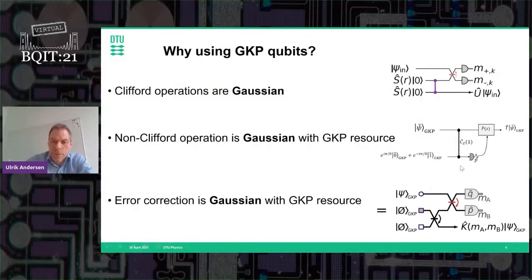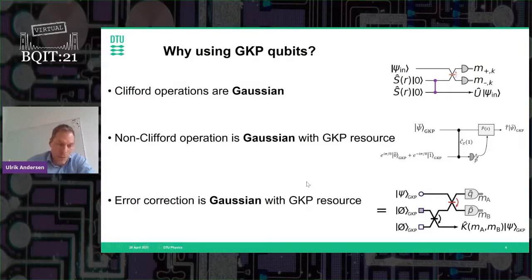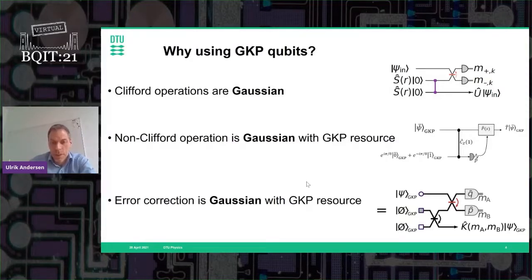Non-Clifford operations can also be done using Gaussian transformations if you have GKP states at your disposal. You implement a two-mode Gaussian state, perform a homodyne measurement, feed forward, and perform another Gaussian transformation — this gives a non-Clifford operation. Now you have a complete universal set of operations needed for universal quantum computing using only Gaussian transformations, as long as you have GKP states as a resource. Most importantly, quantum error correction coding can also be done using Gaussian transformations assuming GKP states as a resource.